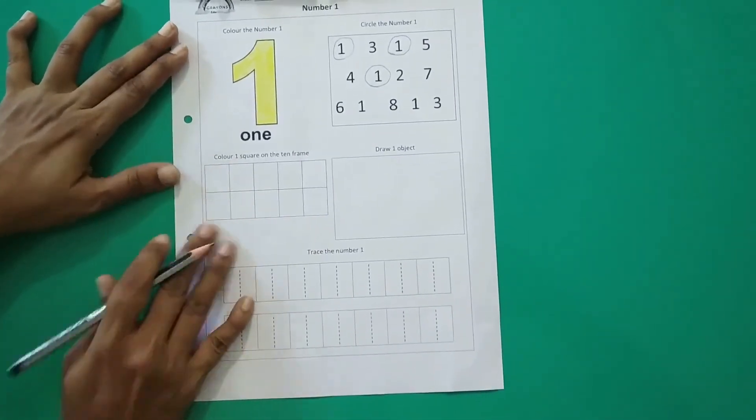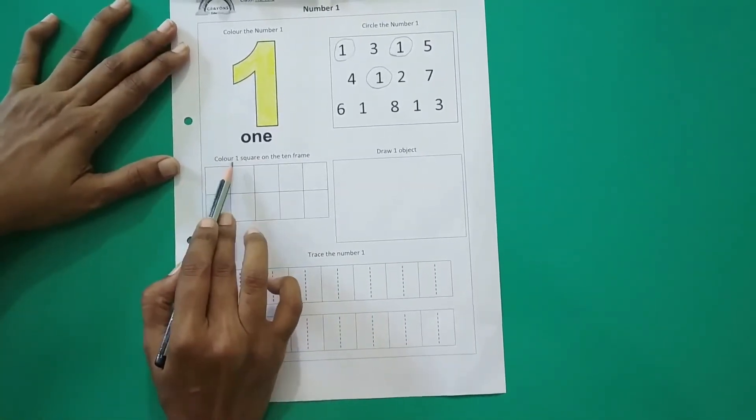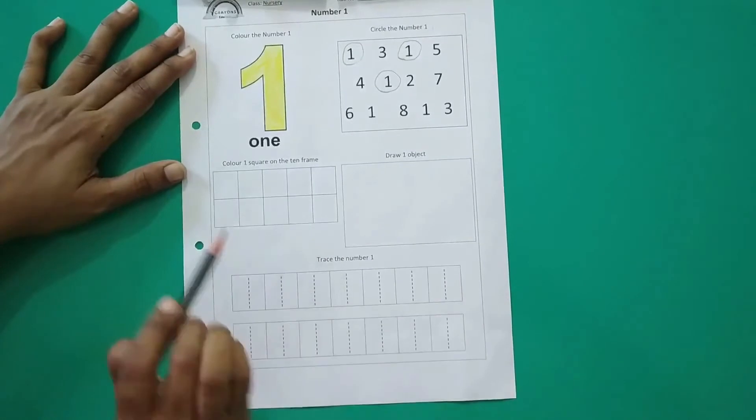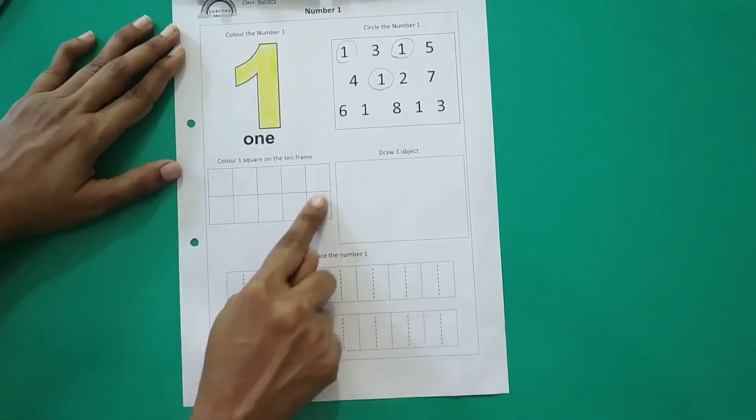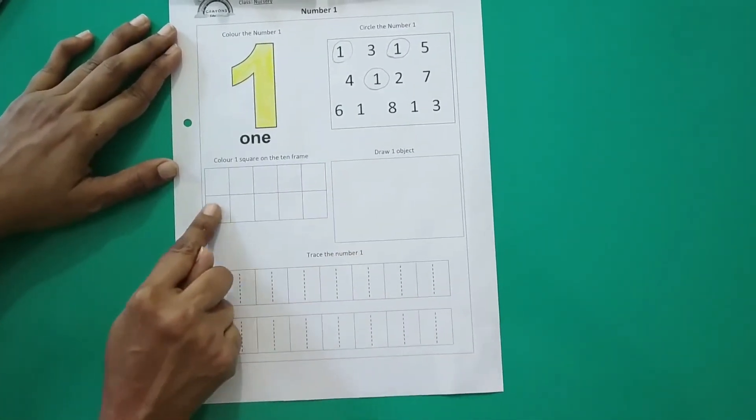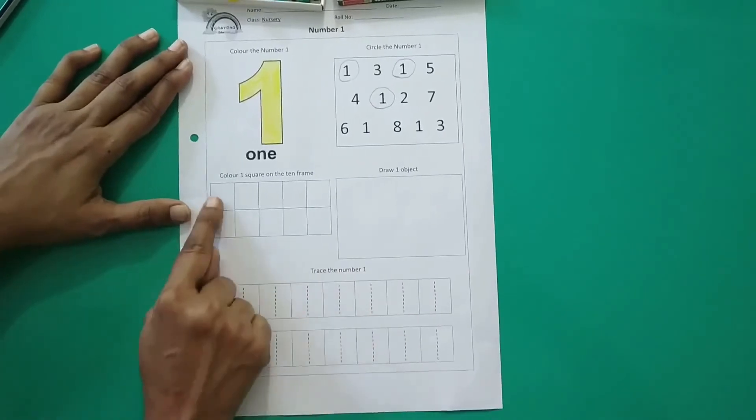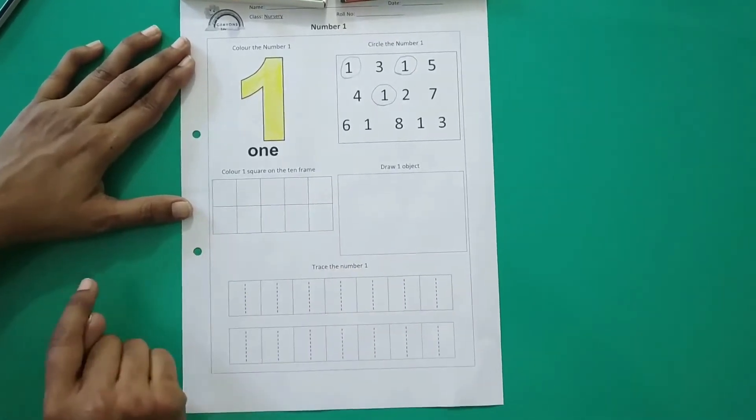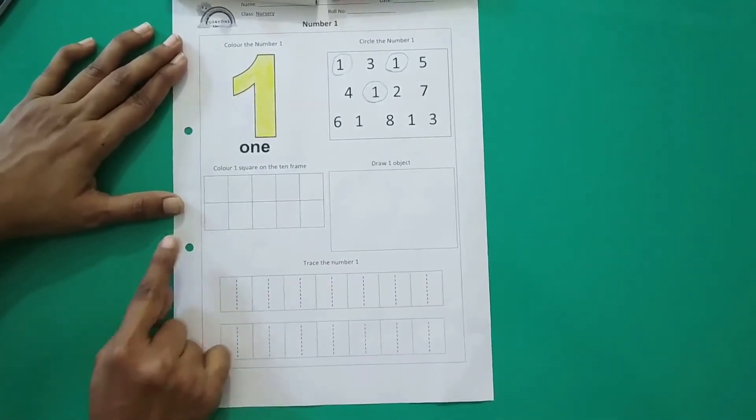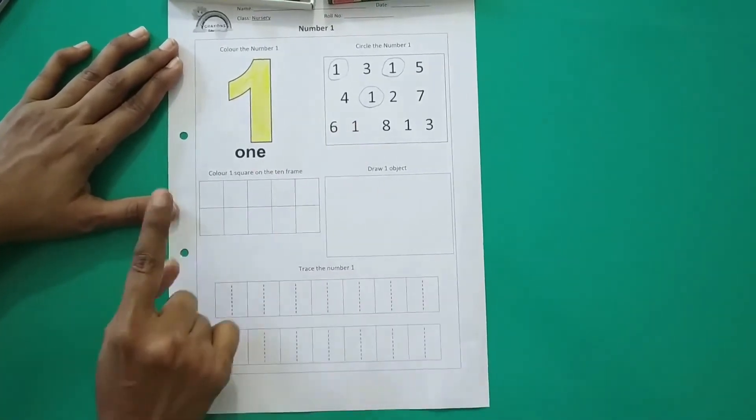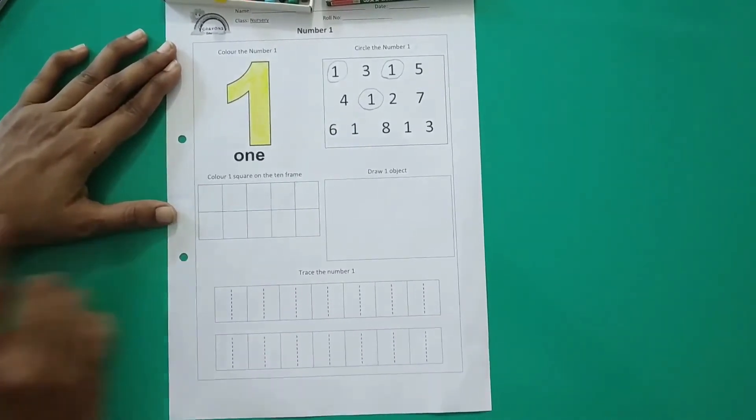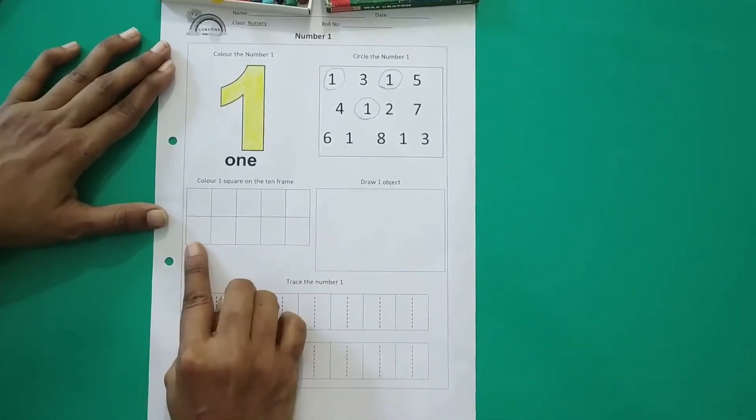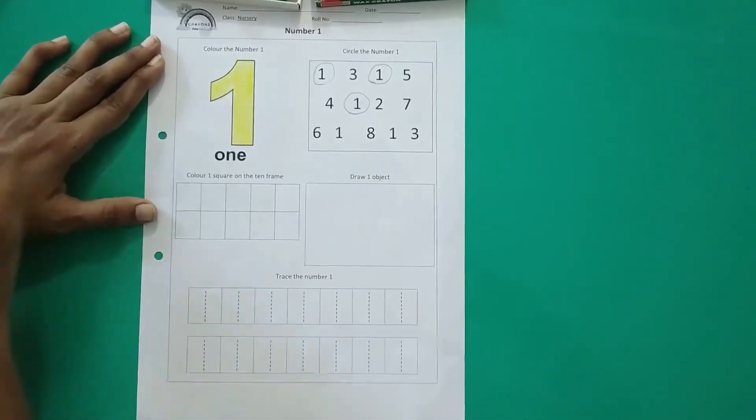Now the next activity is color 1 square on the 10 frame. Ye kya hai? Ye 10 frame hai. Isko 10 frame kyu bolte hai? Isme 10 squares hai. Abhi hame kya karna hai? Say one. One square ko color karna hai. How many squares will you color? Only one square.